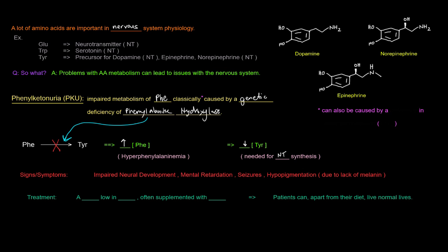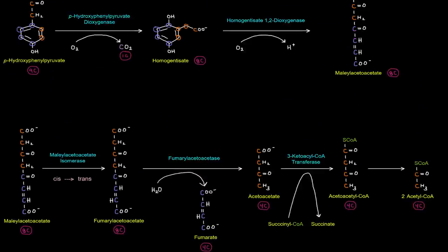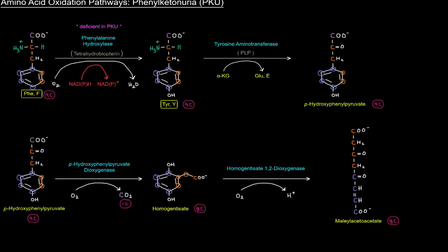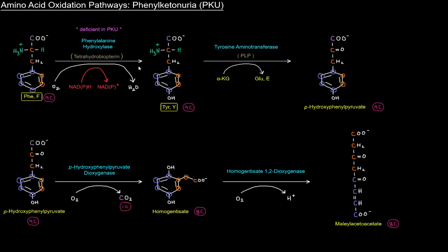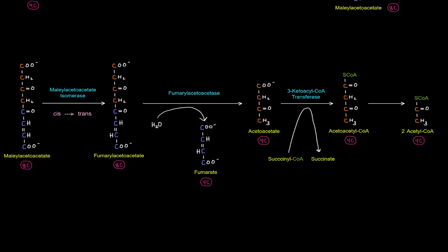You can also have different other types of deficiencies. For instance, if tyrosine aminotransferase is deficient, that's deficient in a disease called tyrosinemia. You can also have tyrosinemia type 3, where this enzyme is deficient. You also have alcaptonuria when this enzyme is deficient. And if this enzyme fumarylacetoacetase is deficient, you'd have tyrosinemia type 1.